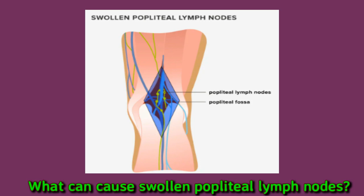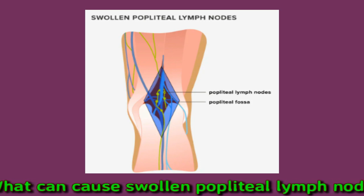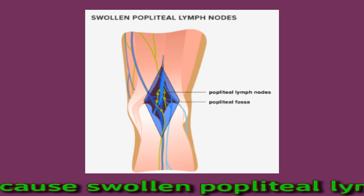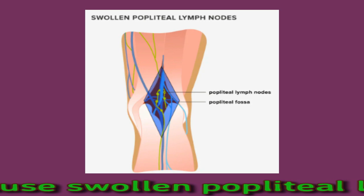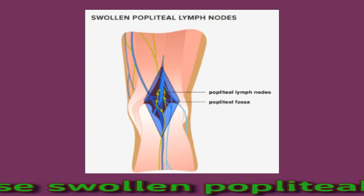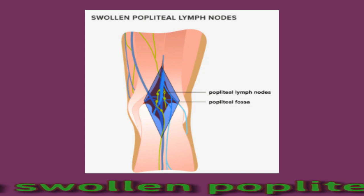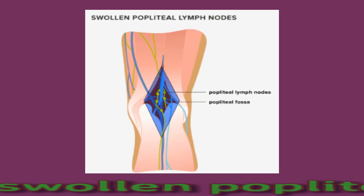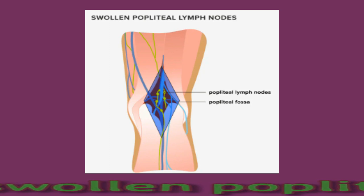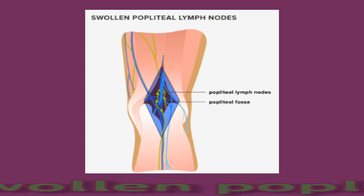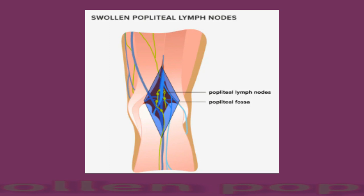Swollen popliteal lymph nodes may also be due to cancer. Several cancers can cause lymphadenopathy, including lymphomas, which are cancers that begin in the lymph nodes. Other cancers can also spread to the lymph nodes, from leukemia to neck cancer. However, according to the American Cancer Society, most swollen lymph nodes are due to a condition that is not cancer. An older study notes that it is rare for cancers to spread to the popliteal lymph nodes.